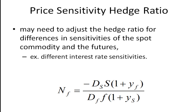Another type of hedge ratio we deal with is when we deal with interest rates — sometimes referred to as a price sensitivity hedge ratio. We may need to adjust how many contracts we use based on different interest rate sensitivities. In this equation, DS is the duration of the spot asset, DF is the duration of the futures contract, and the greater the duration the more interest rate sensitive the asset is going to be.